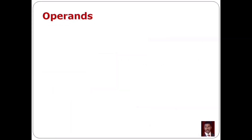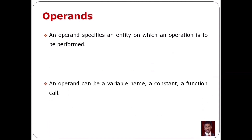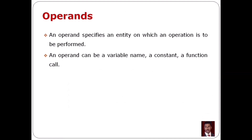Operands — what is an operand? An operand specifies an entity on which an operation is performed. If an operation is performed on an object, that is the operand. Operands can be a variable name, a constant, or a function call.